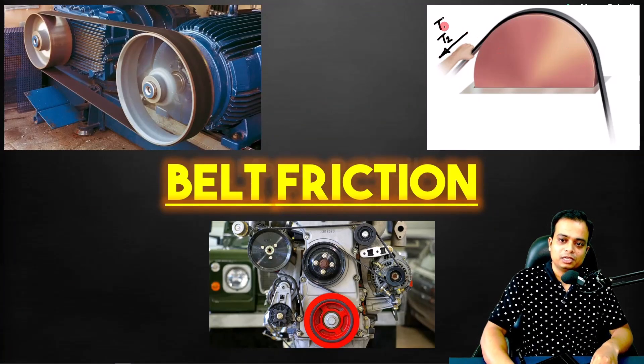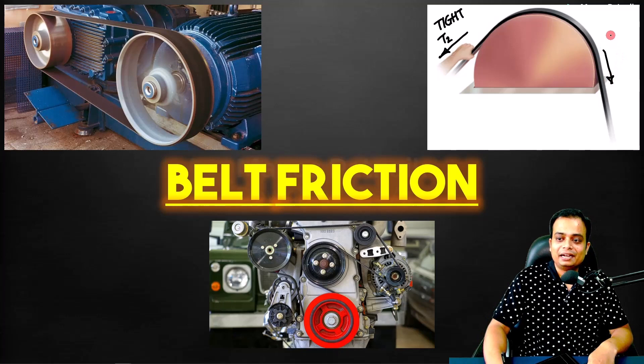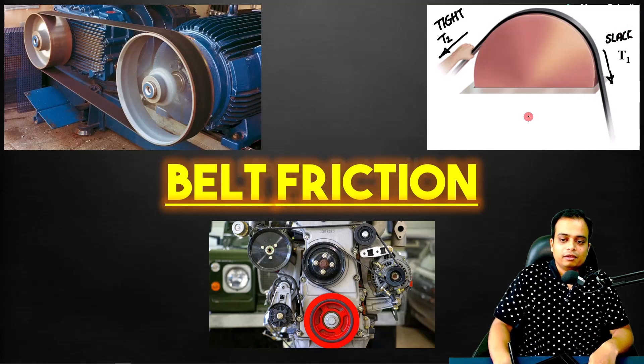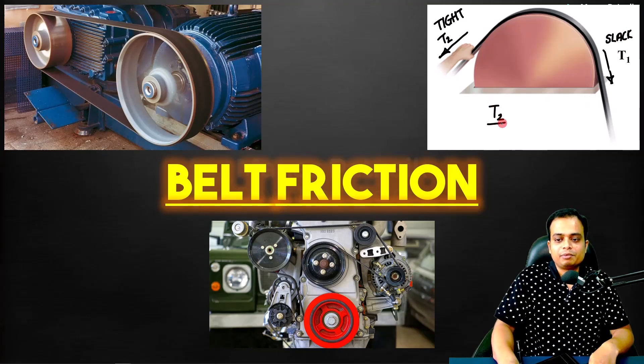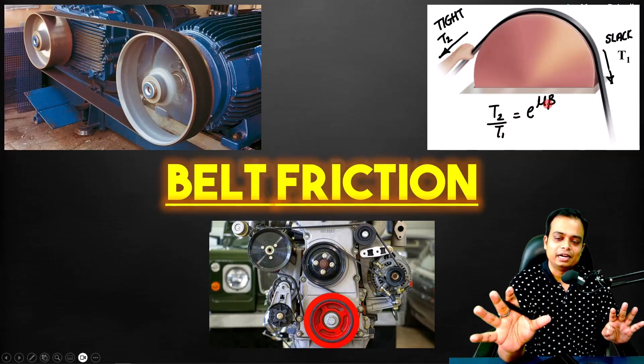This obviously is going to be the tighter side of the belt. Over here, this is going to be the lighter side—the slack side. We call it tension T1. We will try to develop a relation between the tighter side and the slack side: T2/T1 = e^(μβ). We are going to discuss it in detail.